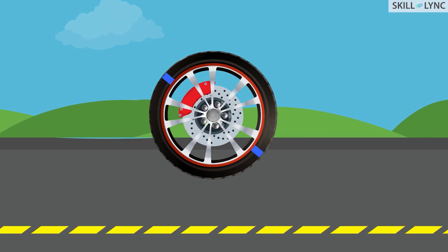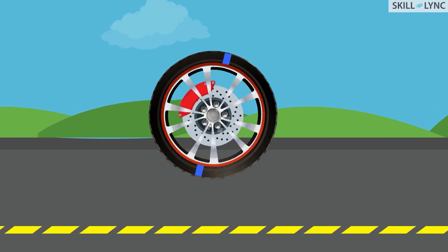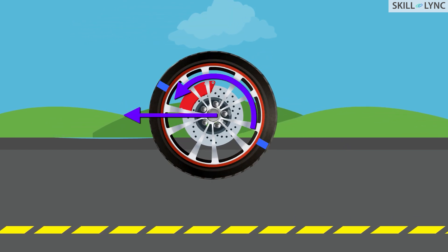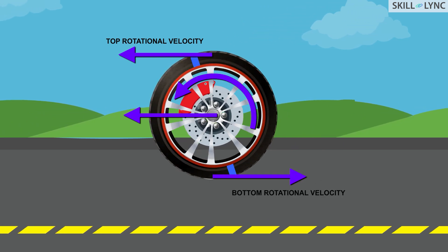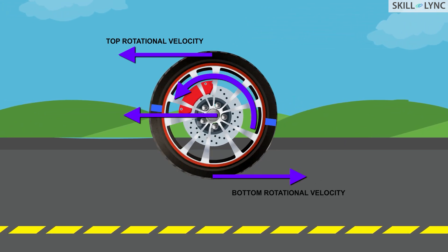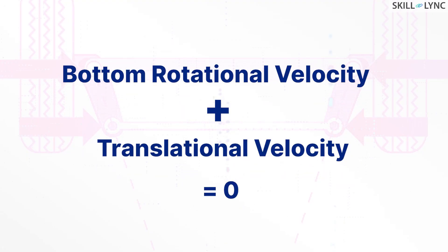For a wheel to work effectively there should be no slipping between the wheel and the road. When we split the velocity components of the wheel we can notice that it has two separate types of velocities acting on it: one is the rotational velocity and the other is the translational velocity. When we add the two bottom components of the wheel, we can notice that they cancel each other, because the translational velocity and the velocity of rotation at the bottom are equal in magnitude but opposite in direction.